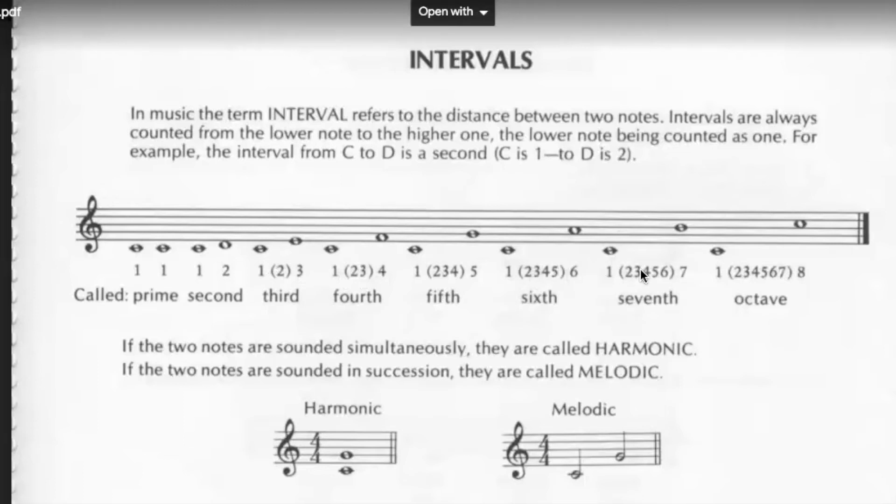One to six. Dough to T is a seventh. And dough to dough, is your octave. The high dough. And we went over this in class, so this is sort of a review.